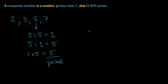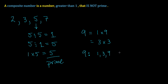Now let's consider 9, which was not in the group of primes less than 10. 9 itself can be written as 1 times 9, or it can be written as 3 times 3. So we would say that 9 has factors of 1, 3, and 9 — it's evenly divisible by 1, 3, and 9. It is not prime by our definition; in fact, it is composite.